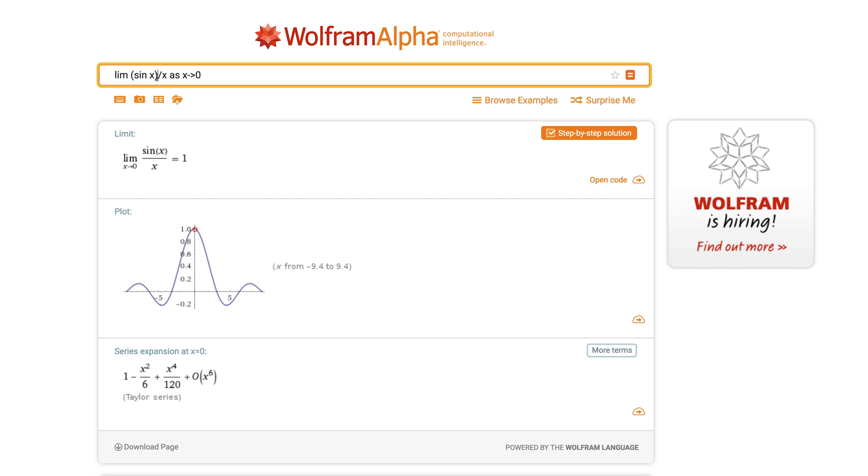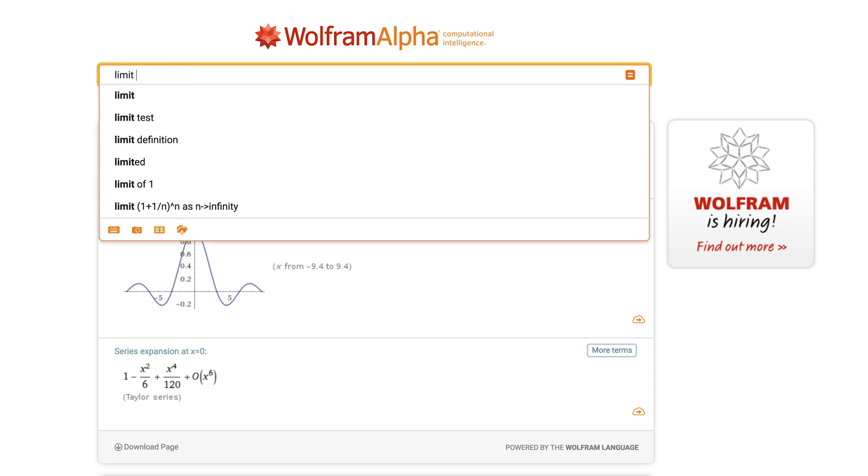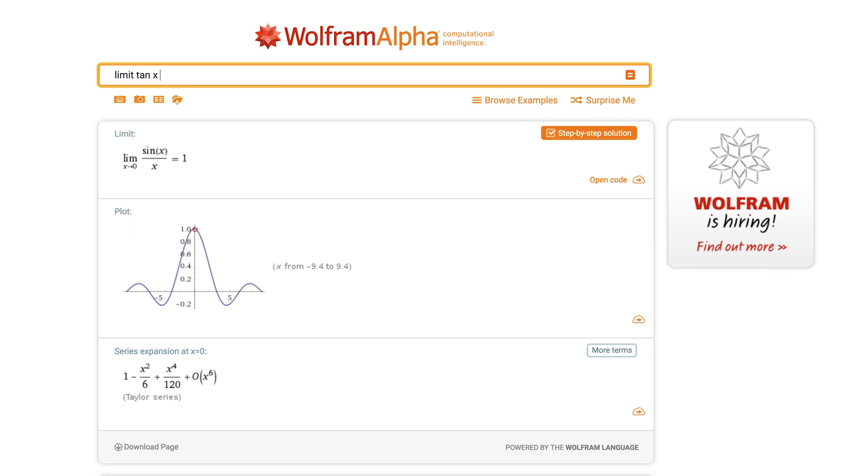To compute a one-sided limit, add plus or minus after the limiting point. For example, let us compute the limit of tangent x as x approaches half pi from the right. Type limit, the function formula, and the limiting point, followed by plus.